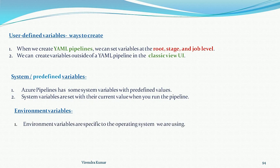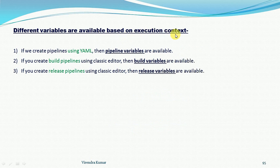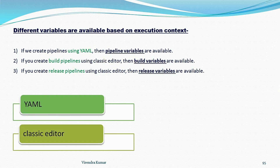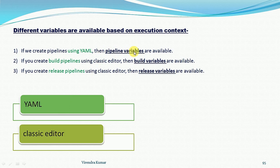Environment variables are specific to the operating system being used, and different variables are available based on the execution context. We have two choices to run the pipeline: one is through the YAML pipeline format, and the second is through the classic editor. Depending on the execution context — for example, running through YAML — the pipeline variables available will differ.